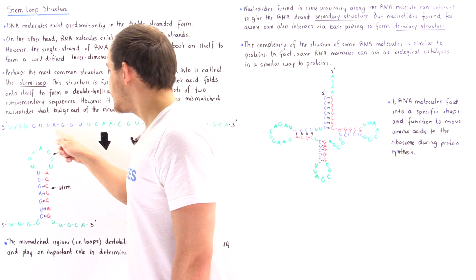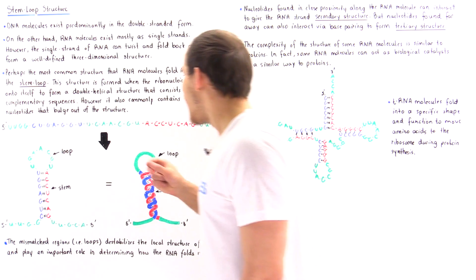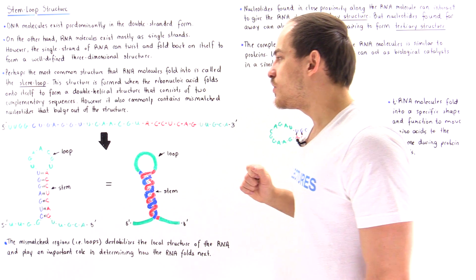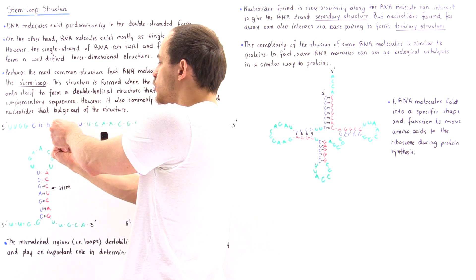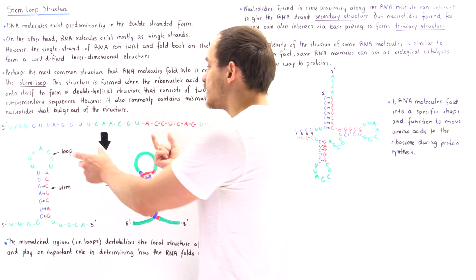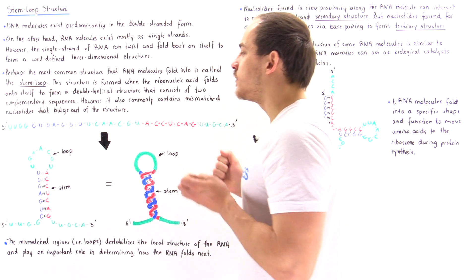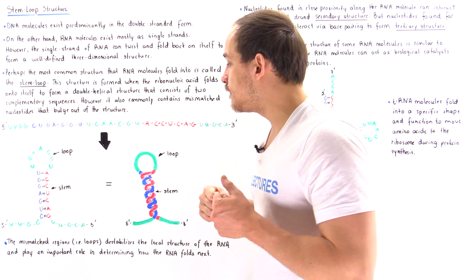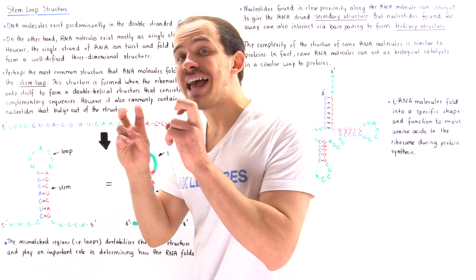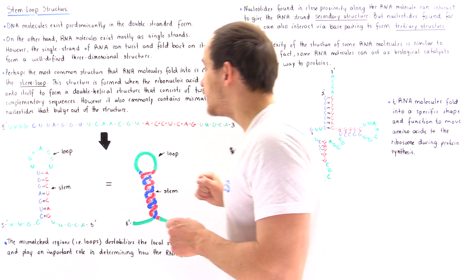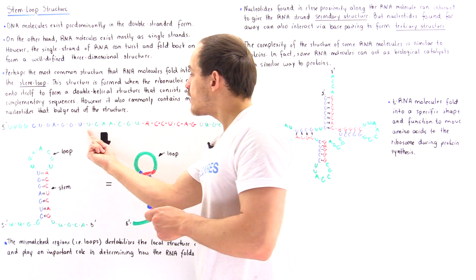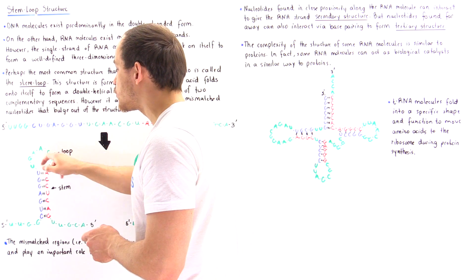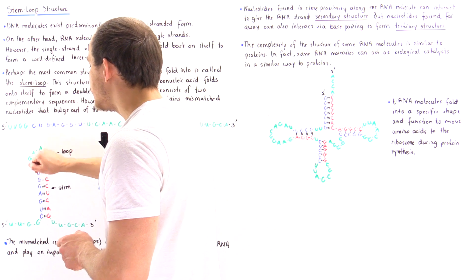Notice that the sequence C-U-G-A-G-G-U is complementary to the sequence G-A-C-U-C-C-A. What that means is these will fold onto themselves and interact because these two sequences of RNA are complementary. When they interact, they form hydrogen bonds, which is a stabilizing effect, and we form the stem of this structure. This is the loop, because when these two sequences interact, there is a section that is not complementary to itself, and so it forms this loop structure in which no hydrogen bonds are formed between these bases.